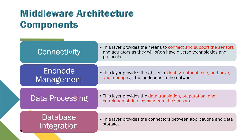The next one is data processing. This layer provides the data translation, preparation, and correlation of data coming from the sensors. It is supposed to be able to process and do the data translation, then prepare and segregate all the information needed, and then correlate all the data coming from sensors. Since there will be a lot of sensors, it should be able to capture all the data and do the data processing automatically. The next one is data integration — this layer provides connectors between application and data storage, combining and integrating all of the information.